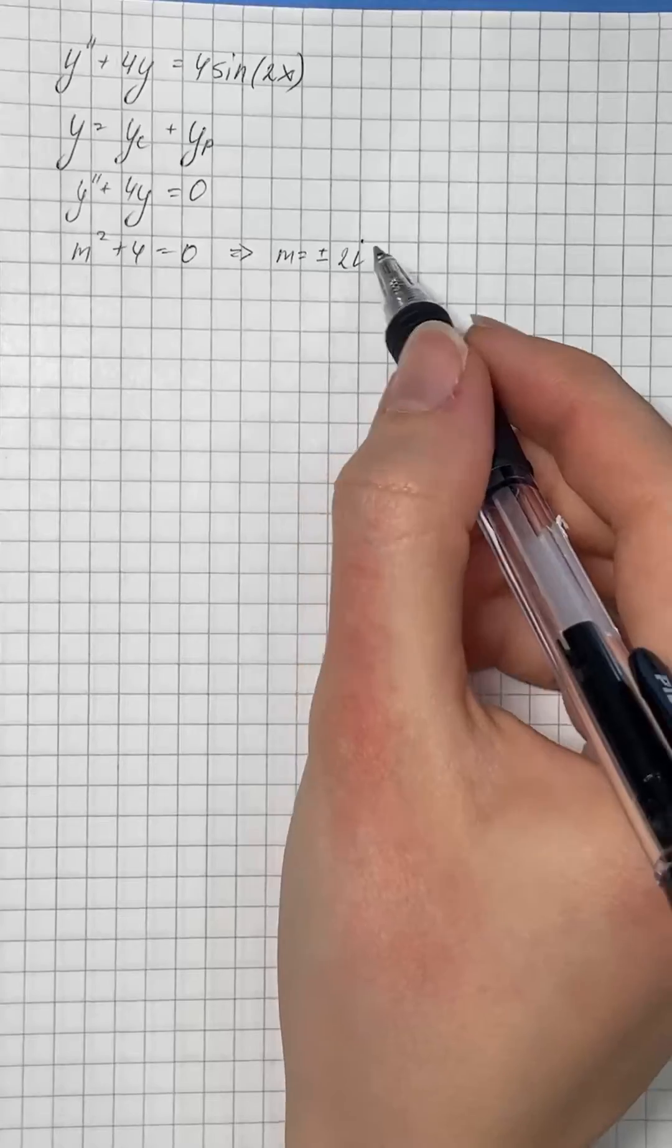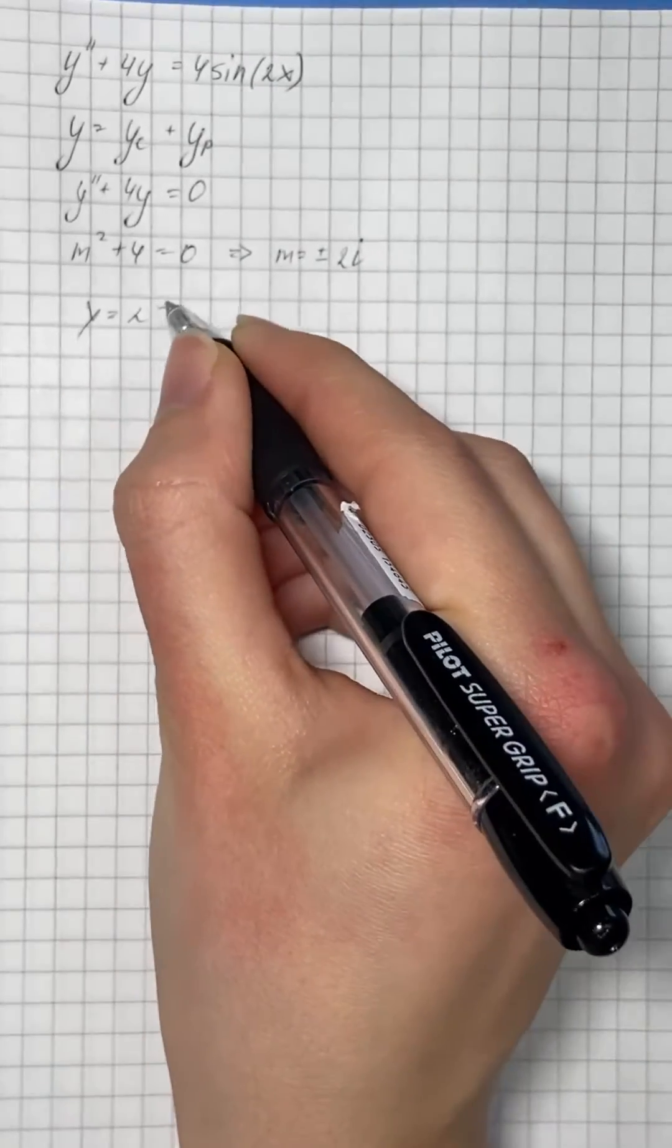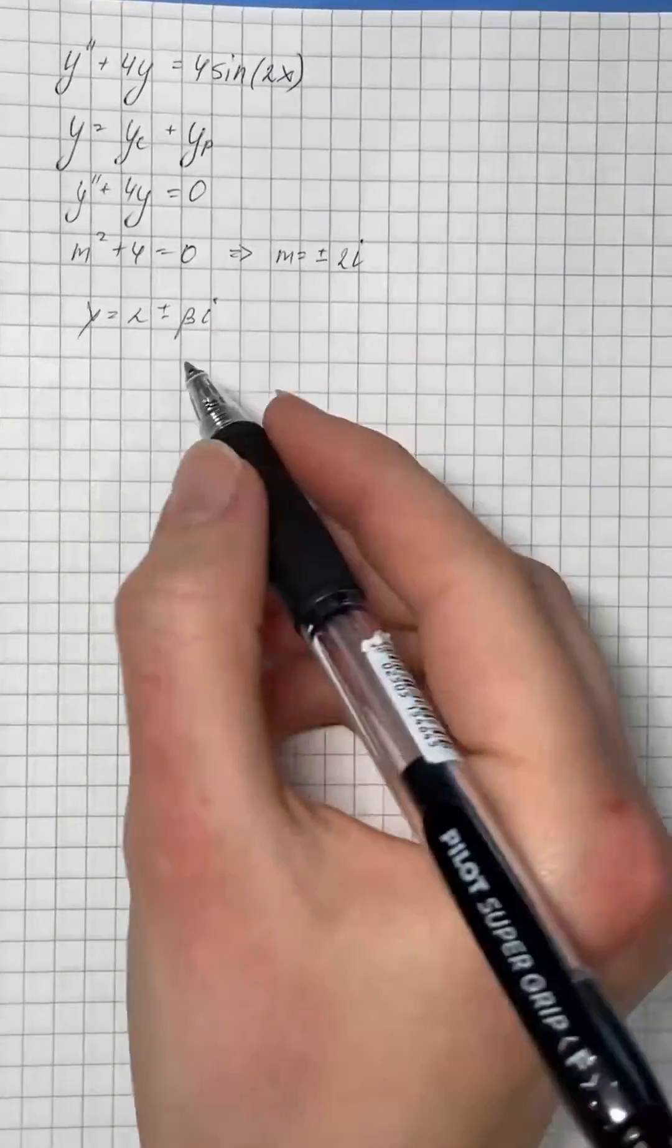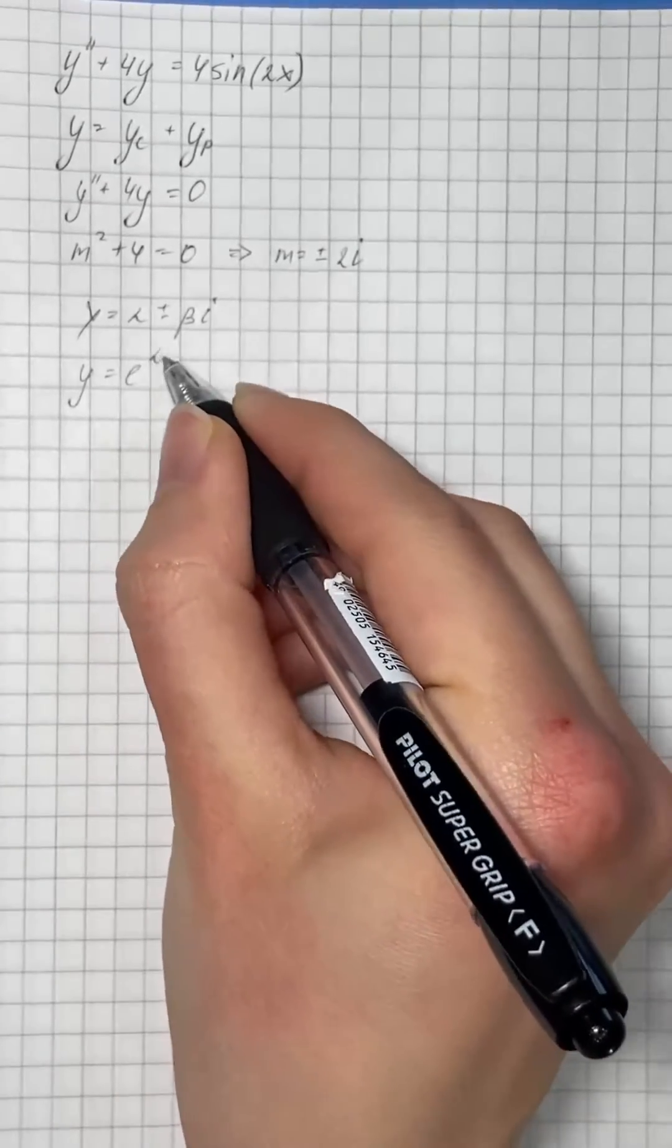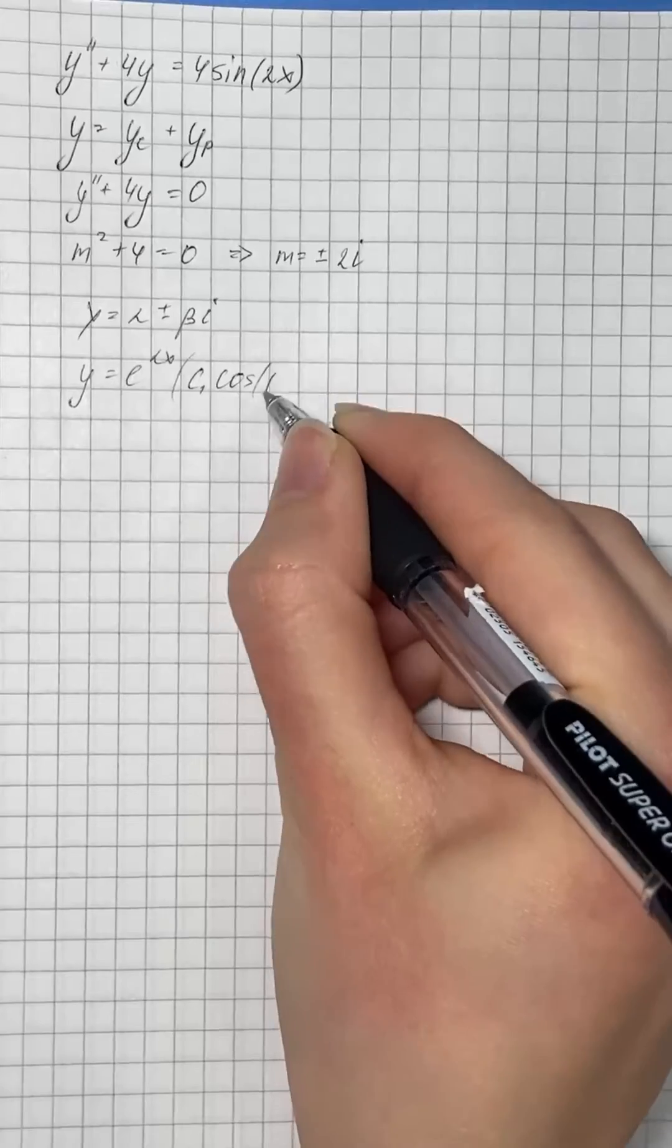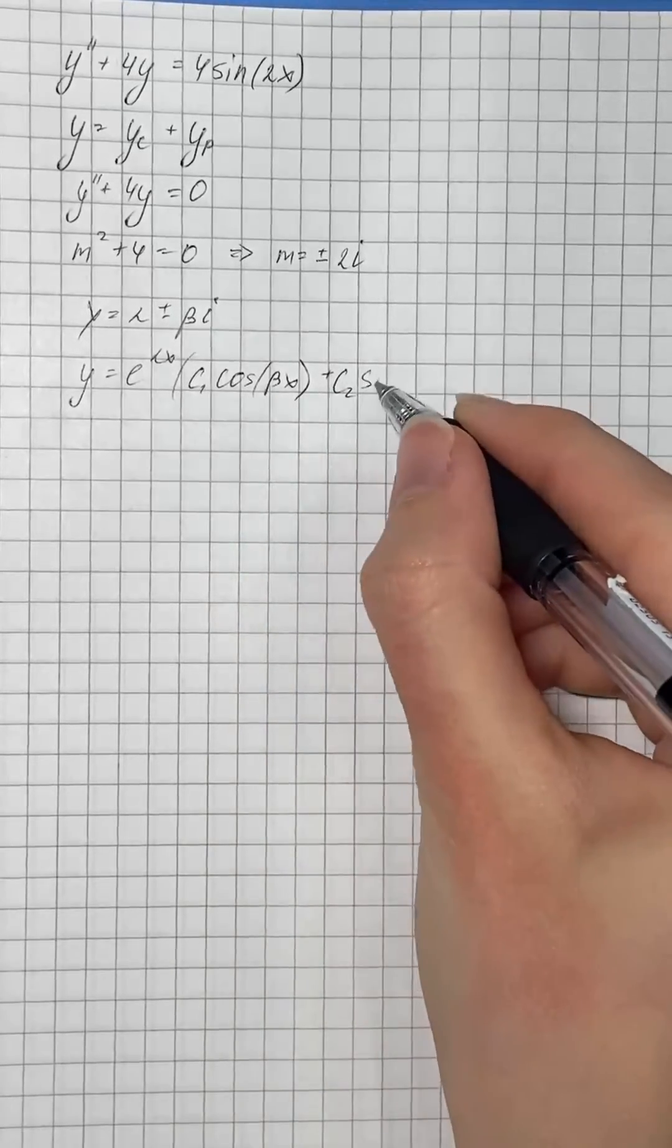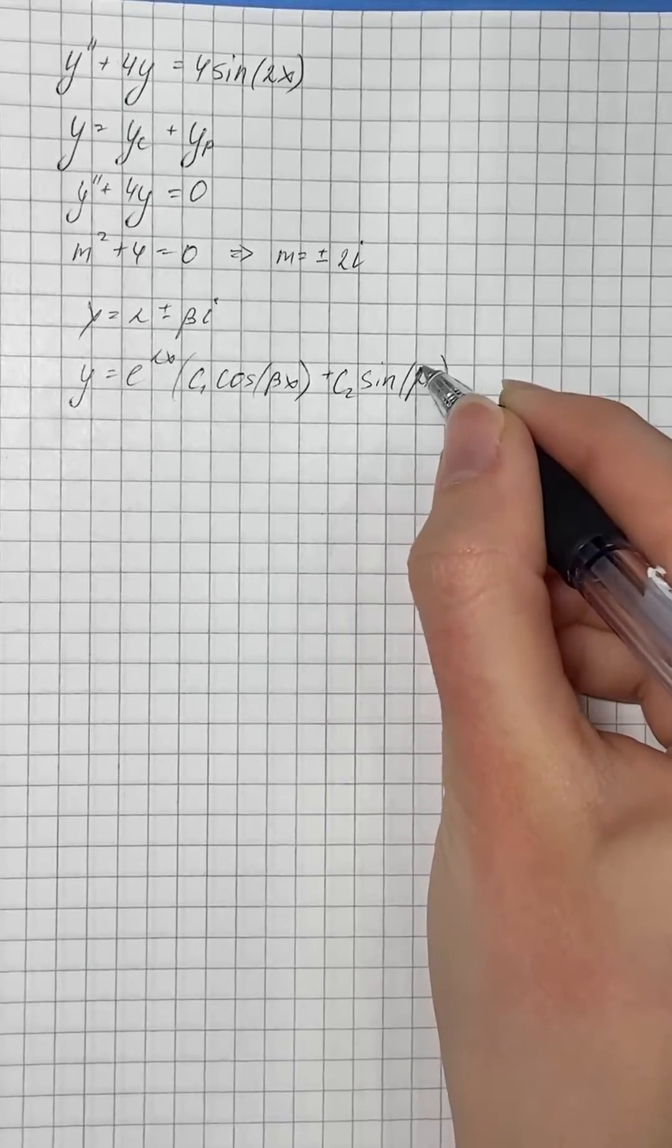The root is in the form alpha plus or minus beta times i. So the solution form is e to the power of alpha x times c1 times cosine of beta x plus c2 times sine of beta x.